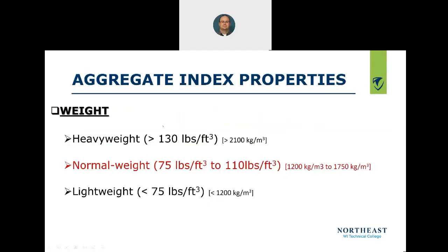Let's talk about weight of aggregates. We have heavyweight aggregate, which is greater than 130 pounds per cubic foot — I have a cubic foot box in my lab to help you visualize that. Normal weight is 75 to 110 pounds per cubic foot. Lightweight is typically less than 75 pounds per cubic foot. Here in Green Bay, Wisconsin, we're in the dolomite range. Heavyweight aggregates come from mining areas with heavy metals like magnetite and hematite, especially in the UP, exceeding 130 pounds per cubic foot.